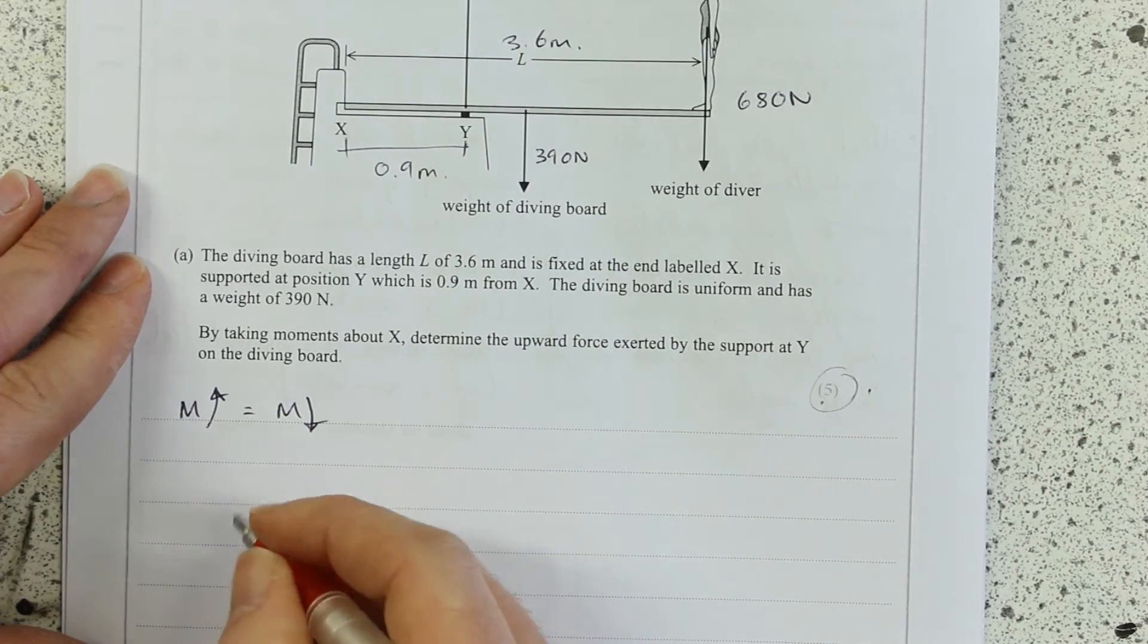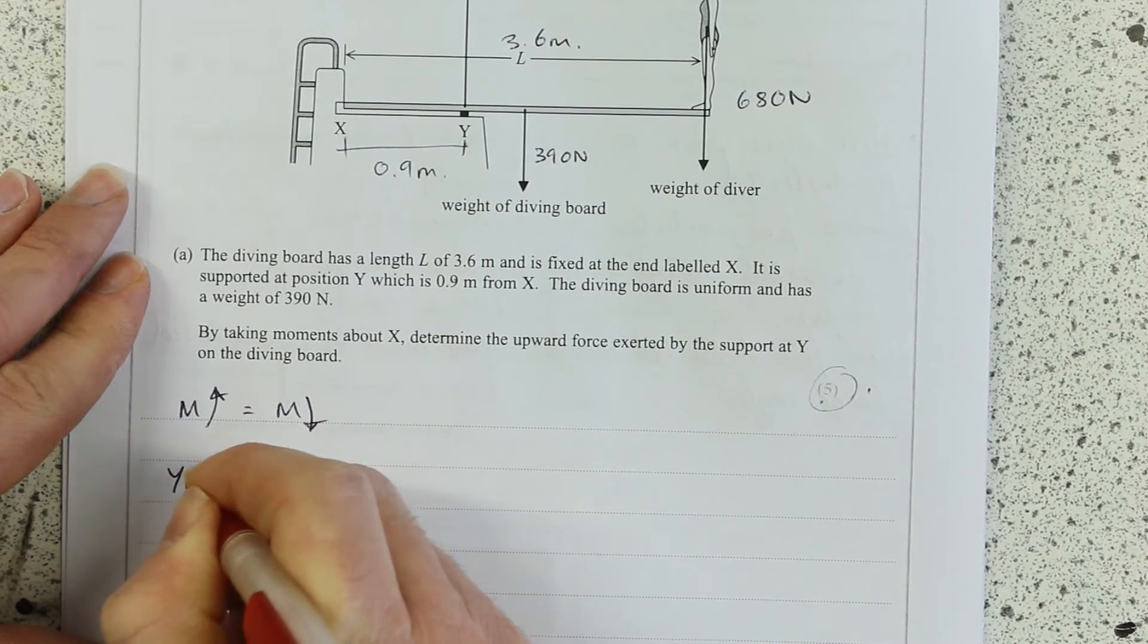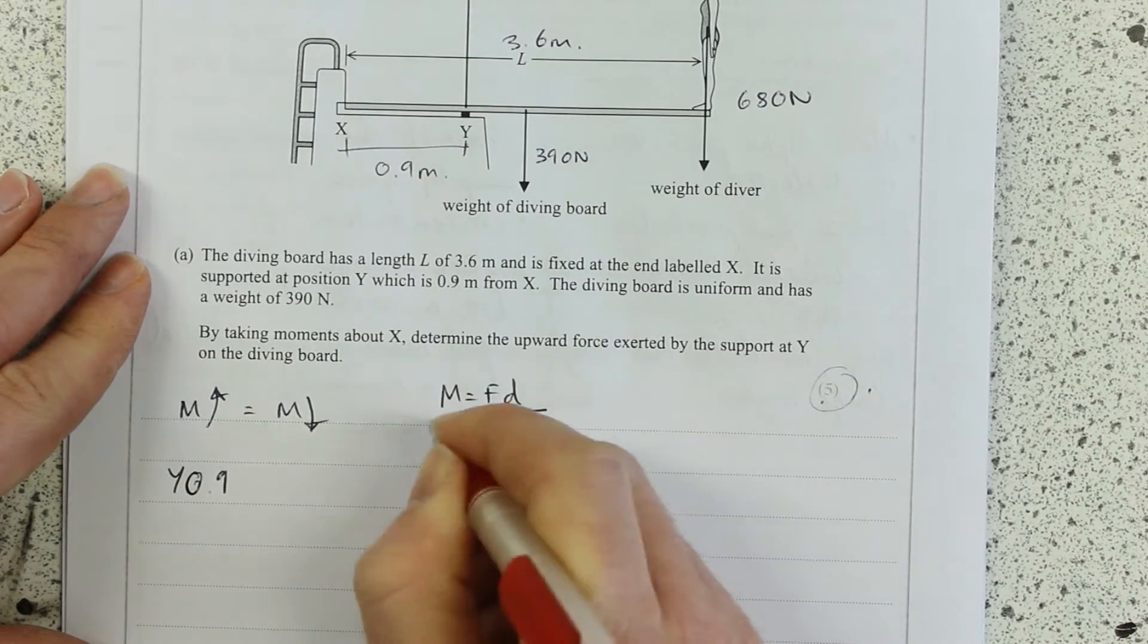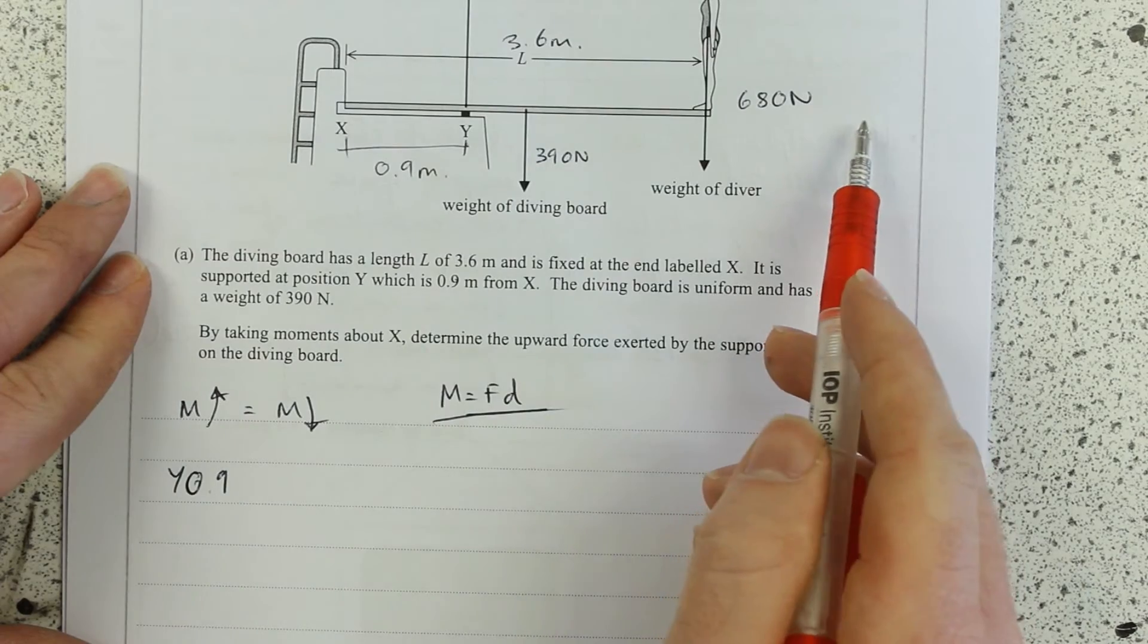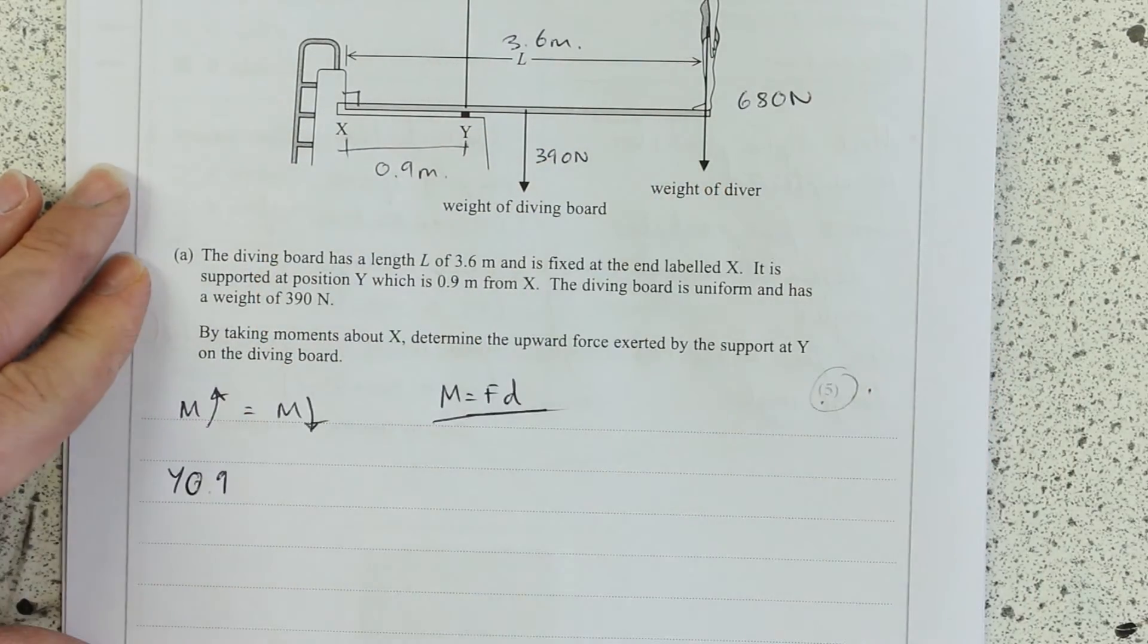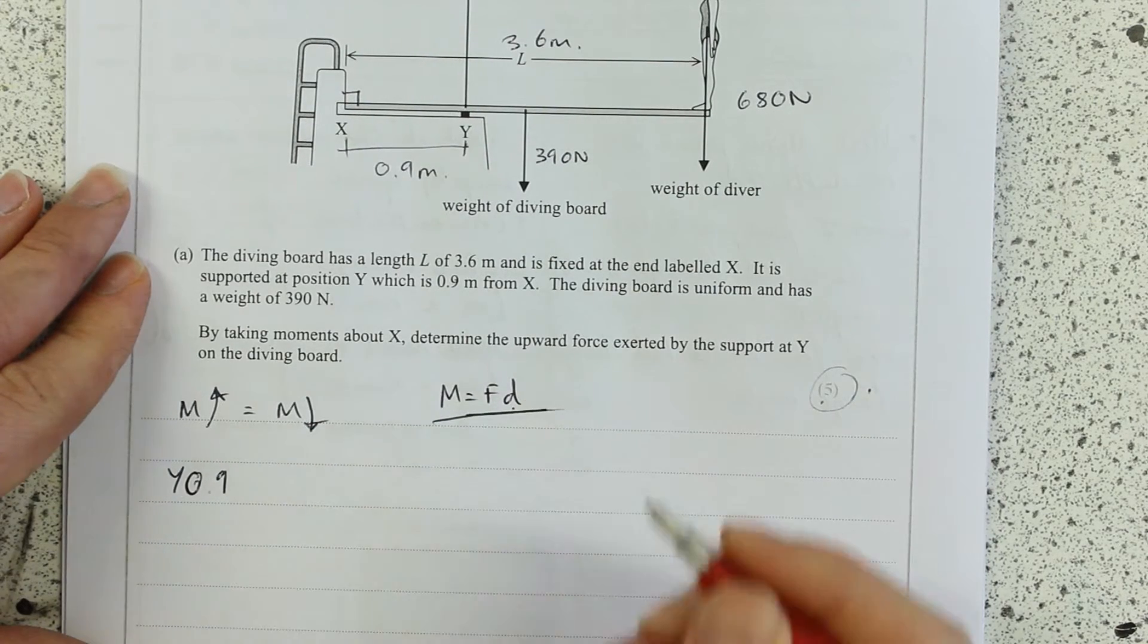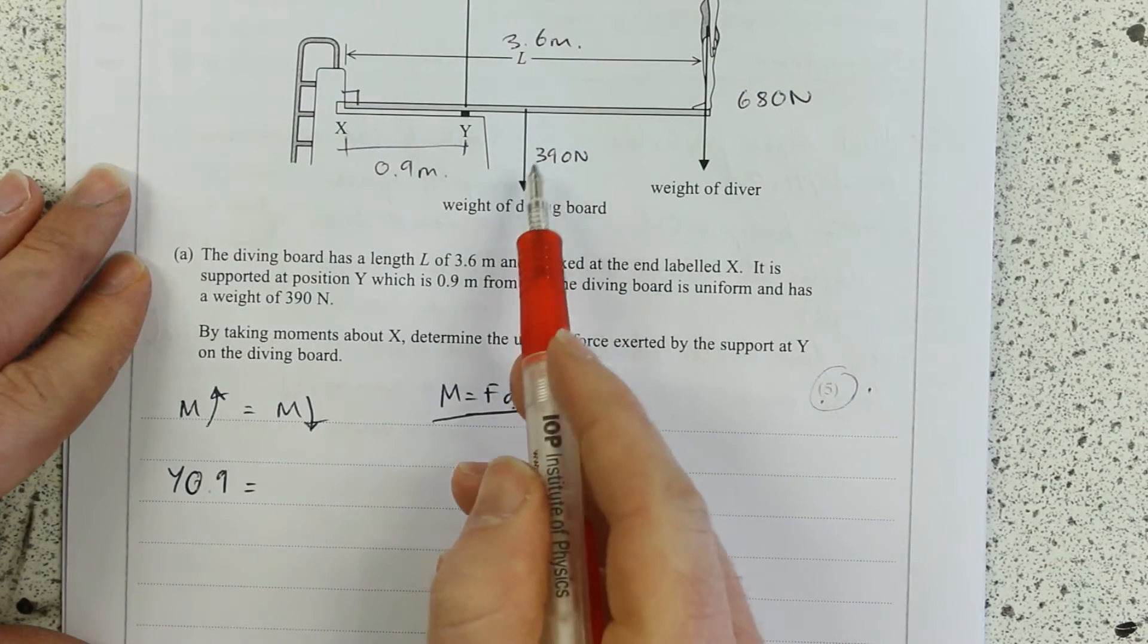Fill out that expression then. Y times 0.9. I hope you all know that a moment is a force times a perpendicular distance. If you don't, then you need to have a little look at that. Luckily, in this case, they're all perpendicular, so we don't have to do any sine relationships. That's nice. You may well have to do that. Remember, perpendicular distance is d.